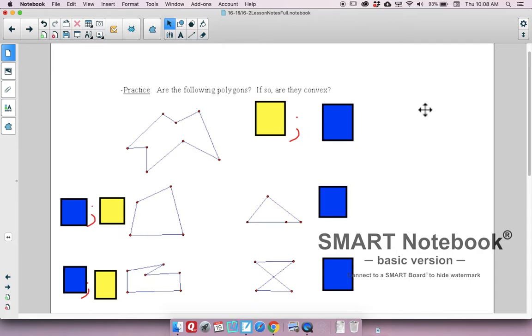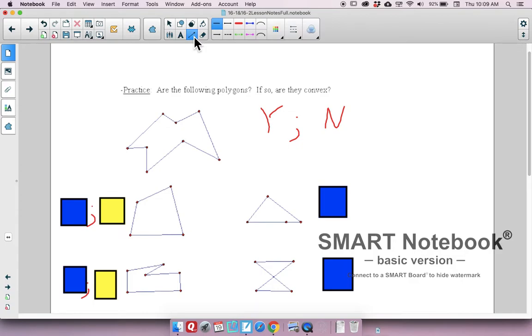So let's take a look at this and figure out whether these figures are polygons. And if so, are they convex? Is this a polygon? The answer is yes. Is this convex? The answer would be no. And here's why. Let's say I drew the line that contains this side right here. Are there points that are on both sides of the polygon? Yeah, there is right there and all these points over here. So that would mean that it is concave, in other words, not convex.